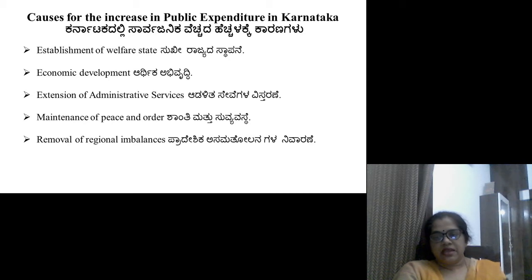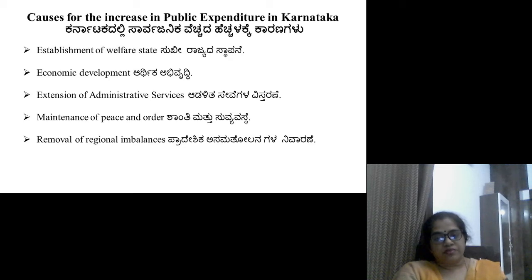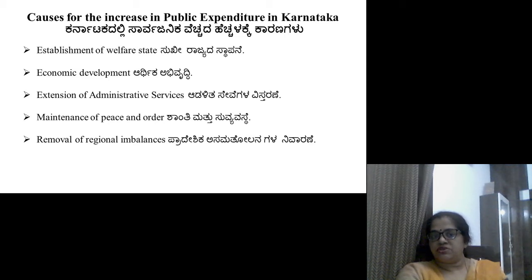The removal of regional imbalances is another cause. The government has to remove regional imbalances and for this it needs to spend a lot, because it has to make special expenditure on backward areas. It has to bring new economic activities or developmental activities in the backward regions and give special provisions for the people living in those backward regions, which invites more expenditure. So in order to remove the regional imbalances, the government is spending a lot, and thus the expenditure of the government is increasing day by day.